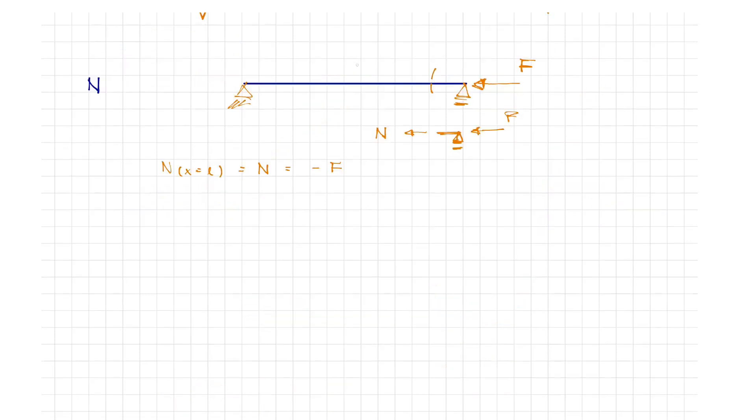The same axial force results in each area of the span length where we can intersect. That is, the normal force distribution is constant. The reason for this is that we only have an external horizontal action at the beam end.